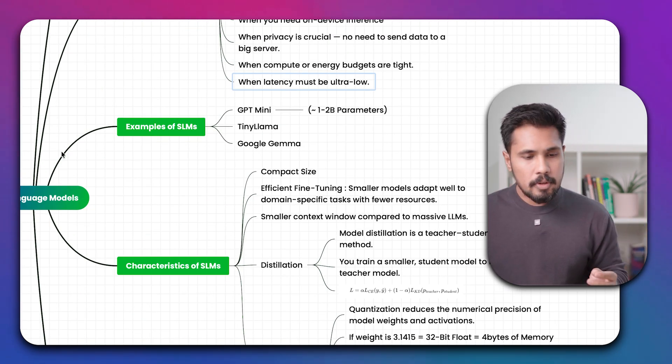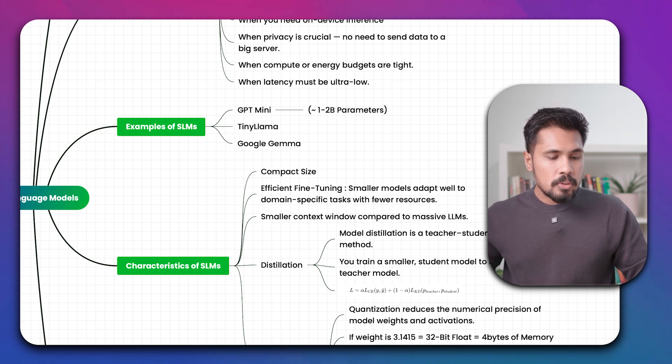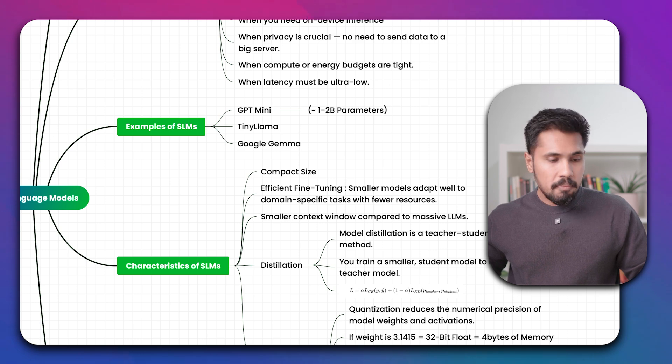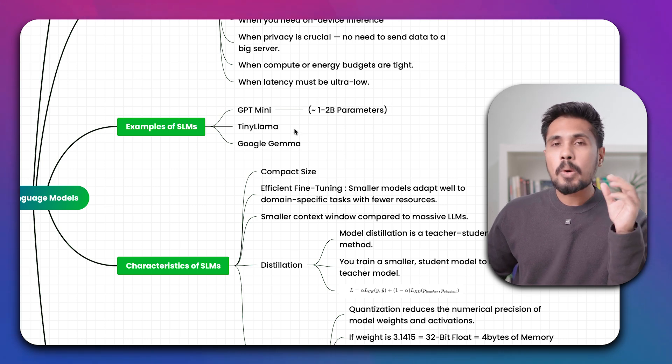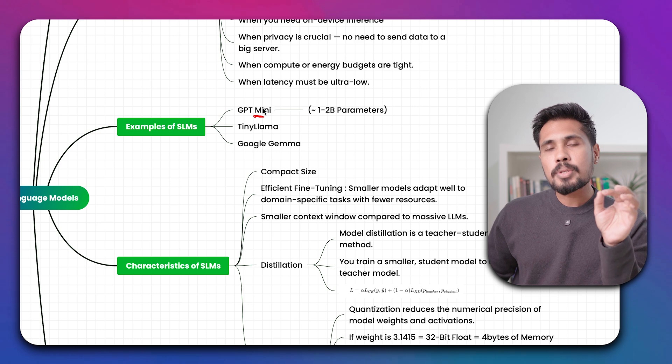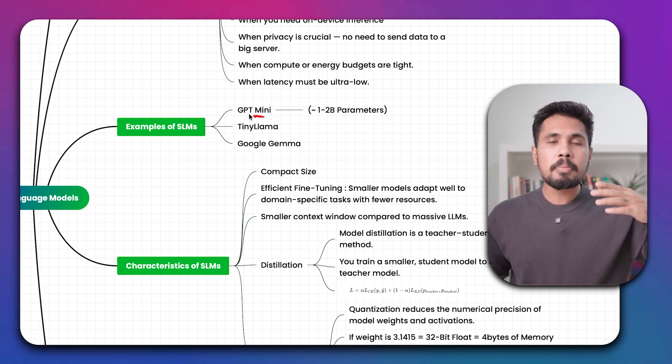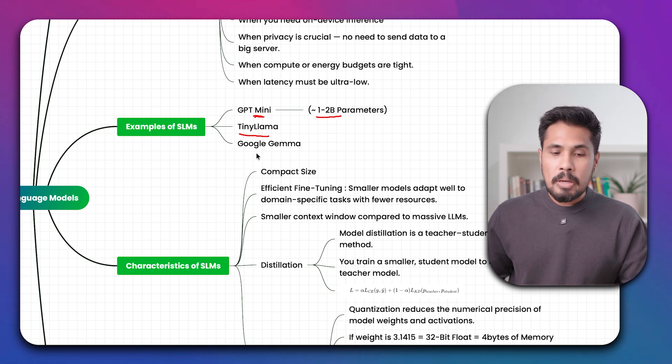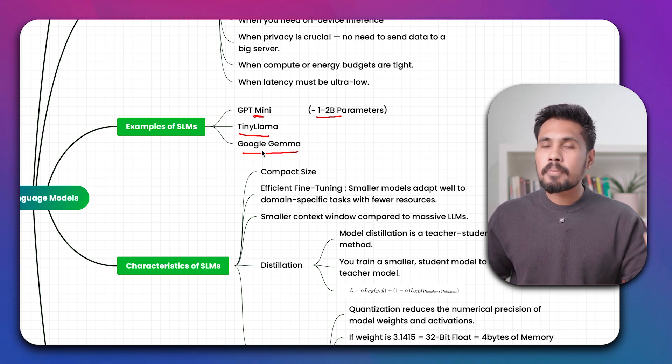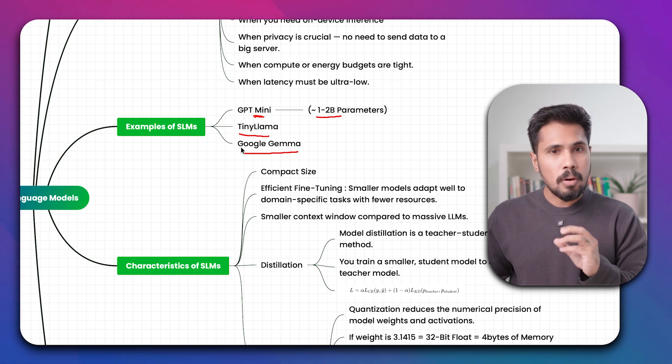Examples of small language models, which we are already aware of, is called GPT Mini or GPT 4.0 Mini. The bigger version of GPT is 4.0, and the smaller version is 4.0 Mini. If anyone wants cheaper costing, people use Mini. But the accuracy or performance of Mini may not be that brilliant as ChatGPT-4, but for certain activities, cost-wise it is less. We have around 1 to 2 billion parameters. We have Tiny Llama models or Google Gemma models. Any of this comes into the concept of SLM.